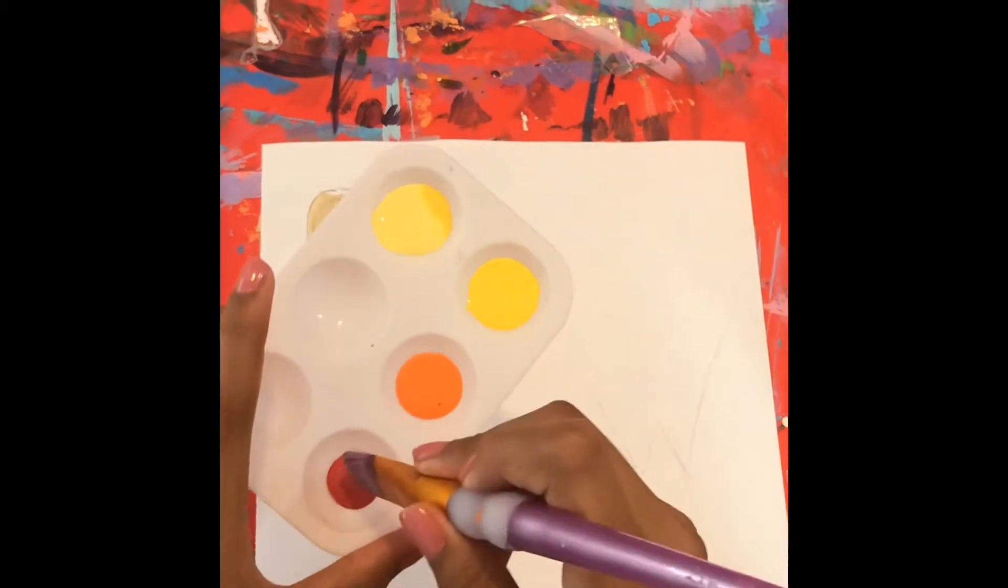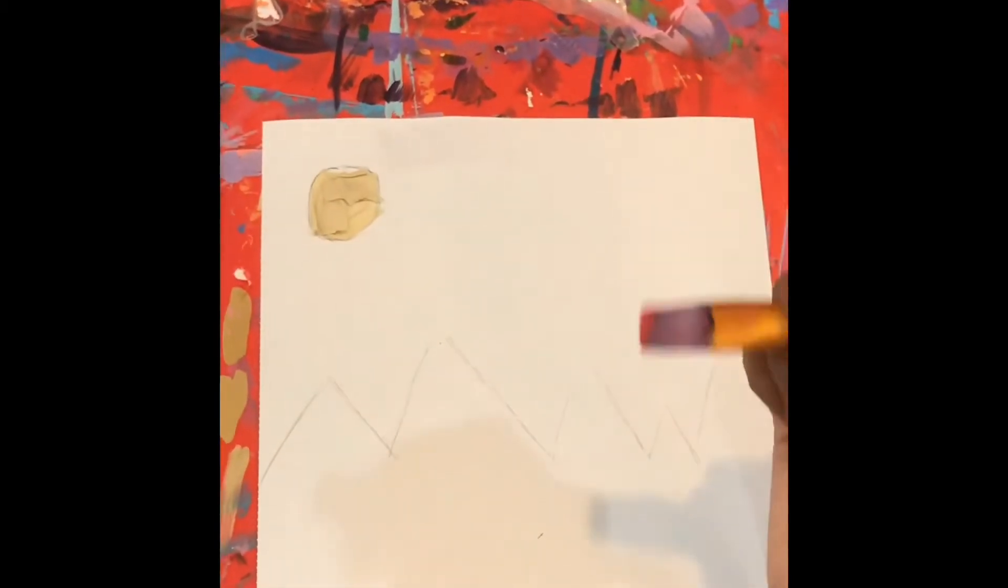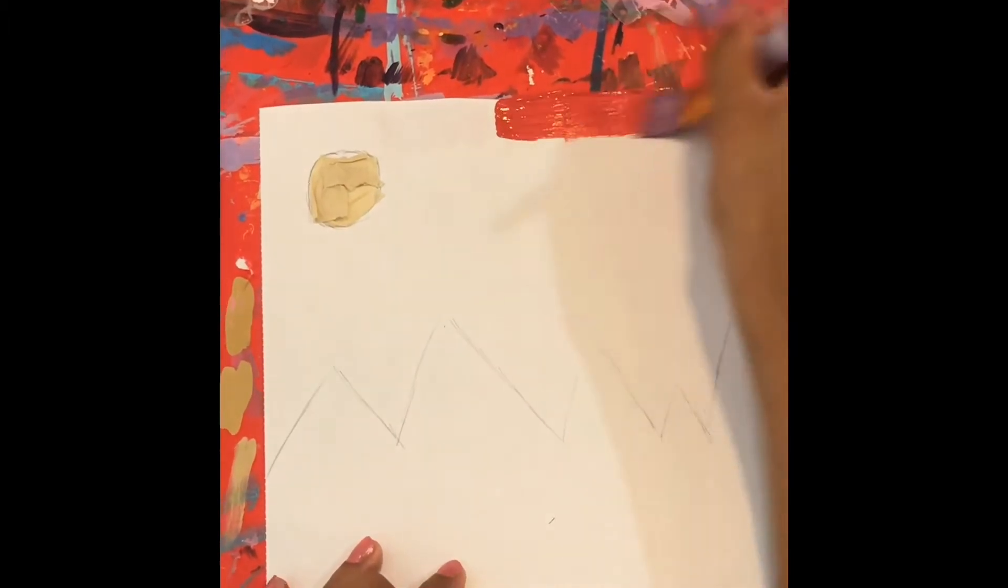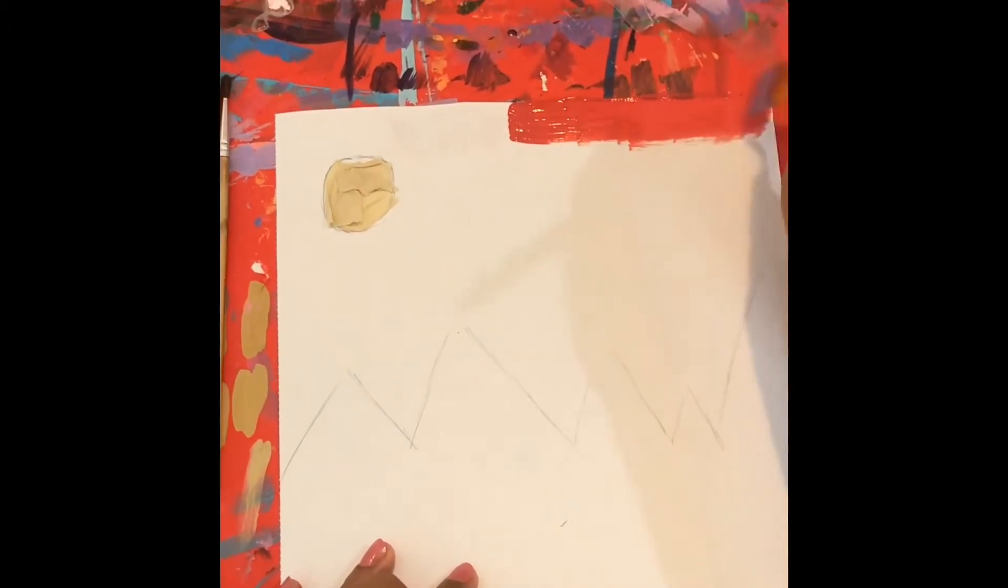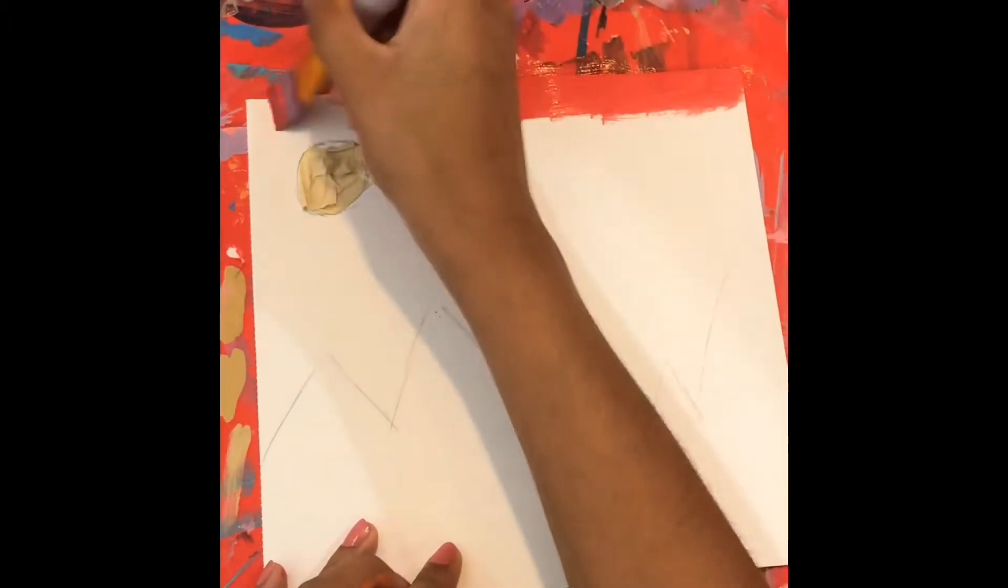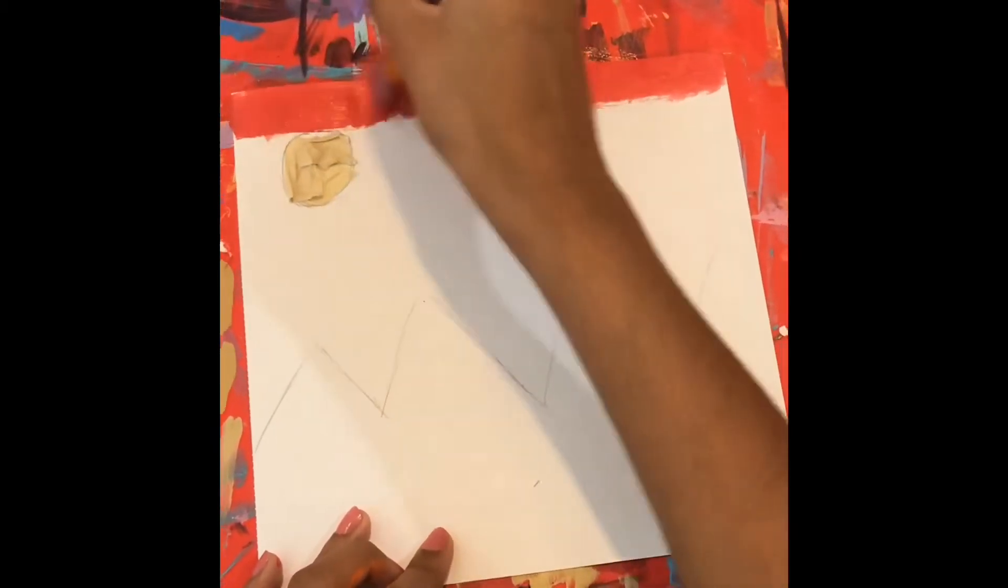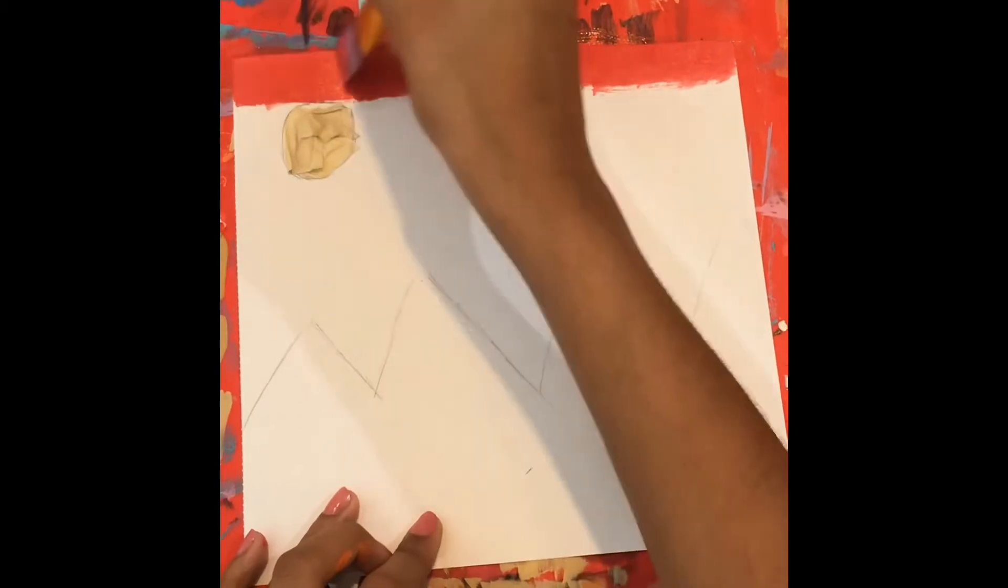First you want to take some red paint and start painting at the top of the paper. After you do that, you want to wash your brush.